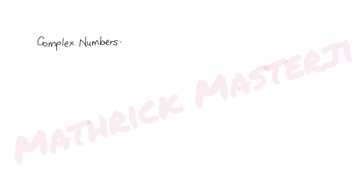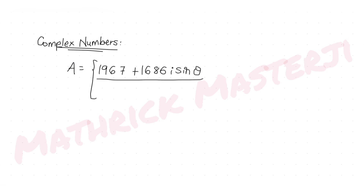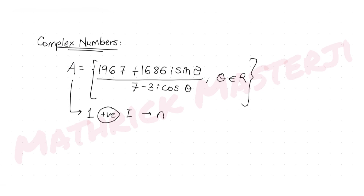Hi guys, I hope you are all doing well. Today's question is from the topic of complex numbers, continuing our series of questions on JEE Advanced. The question says: let A be a set with the expression (1967 + 1686i sinθ) / (7 − 3i cosθ), where θ belongs to ℝ. The set A contains exactly one positive integer n, and the question asks us to find the value of n.